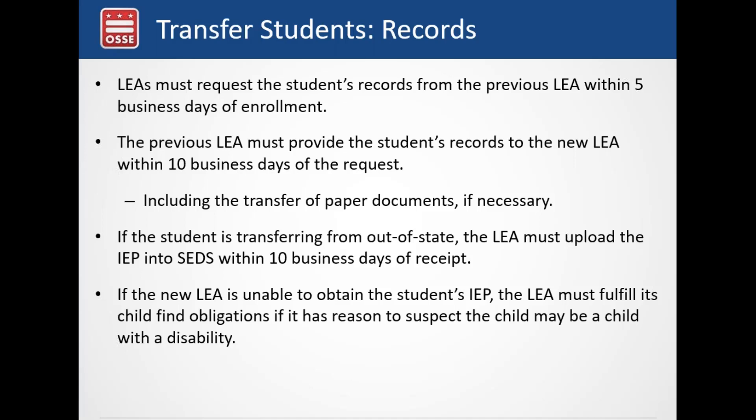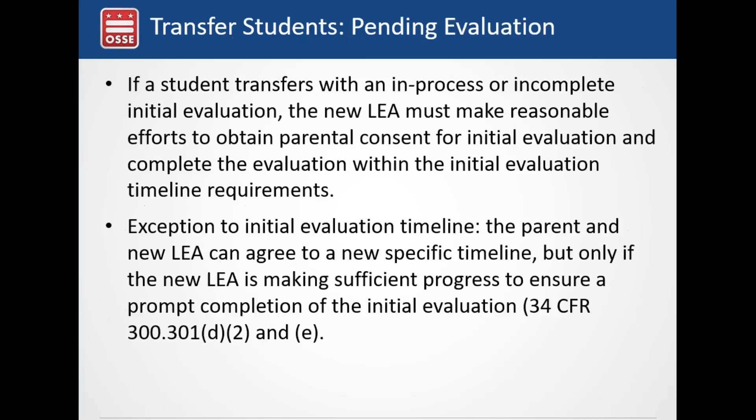If the new LEA is unable to obtain the student's IEP, you still have child find obligations. If a parent says their child was receiving services but doesn't have the IEP and you can't obtain it from the parent or previous school, you have reason to believe this child may have a disability and child find obligations to collect data and conduct an initial evaluation if necessary. A parent stating the child previously received services should be treated as a referral, so pay attention to what you're hearing about students coming into your LEA.